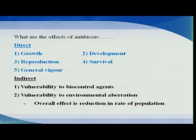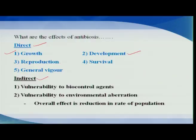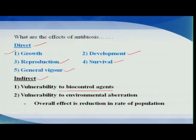How do antibiotic factors affect the insect? There are two important ways: direct and indirect. In the direct way, it directly affects the growth and development of the insect, the development process, reproduction, and ultimately the survival and general vigor of the insect. Indirectly, it makes the insect vulnerable to biocontrol agents — when insect growth and development is affected, natural enemies will take over and control the pest. There is also vulnerability to environmental aberrations, with the overall effect being a reduction in the rate of population.